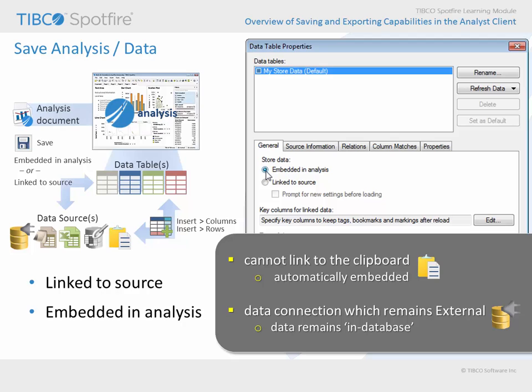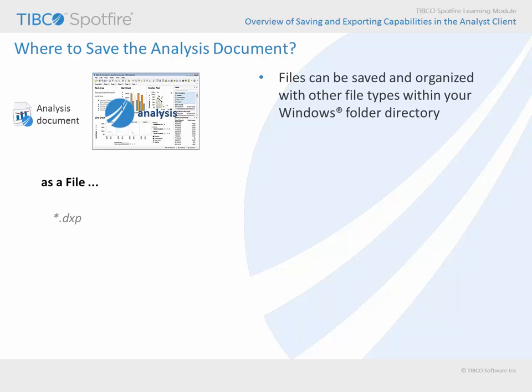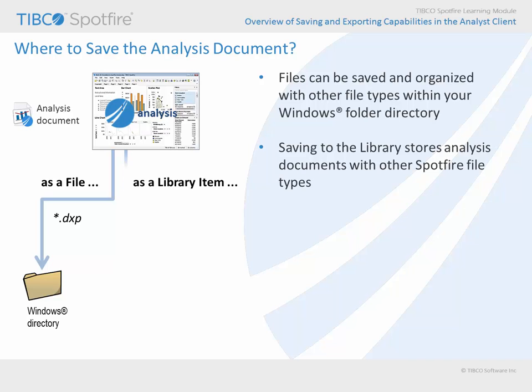In addition to deciding how you wish to save the analysis relative to the data which supports that analysis, you will need to choose where you wish to save that analysis document. The Analyst client provides two options for saving an analysis document. First, it can be saved as a file — this saves your analysis document into a Windows directory on your computer or network, just like the files from other applications, and the resulting file has a .dxp extension.